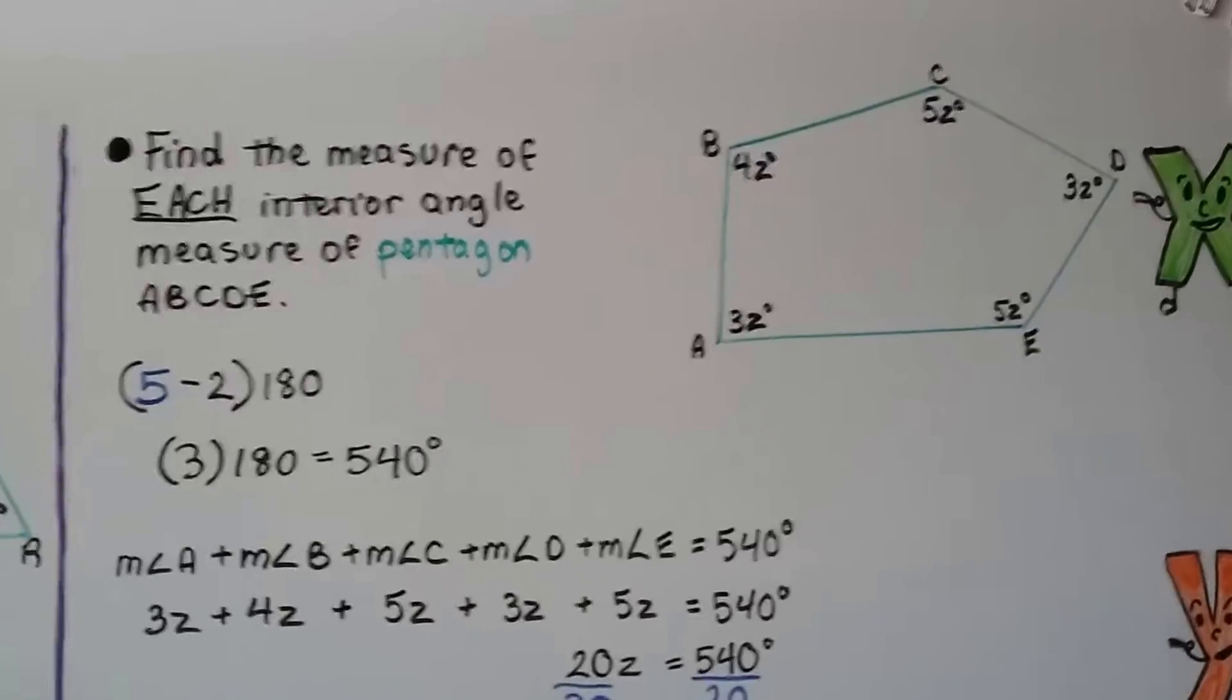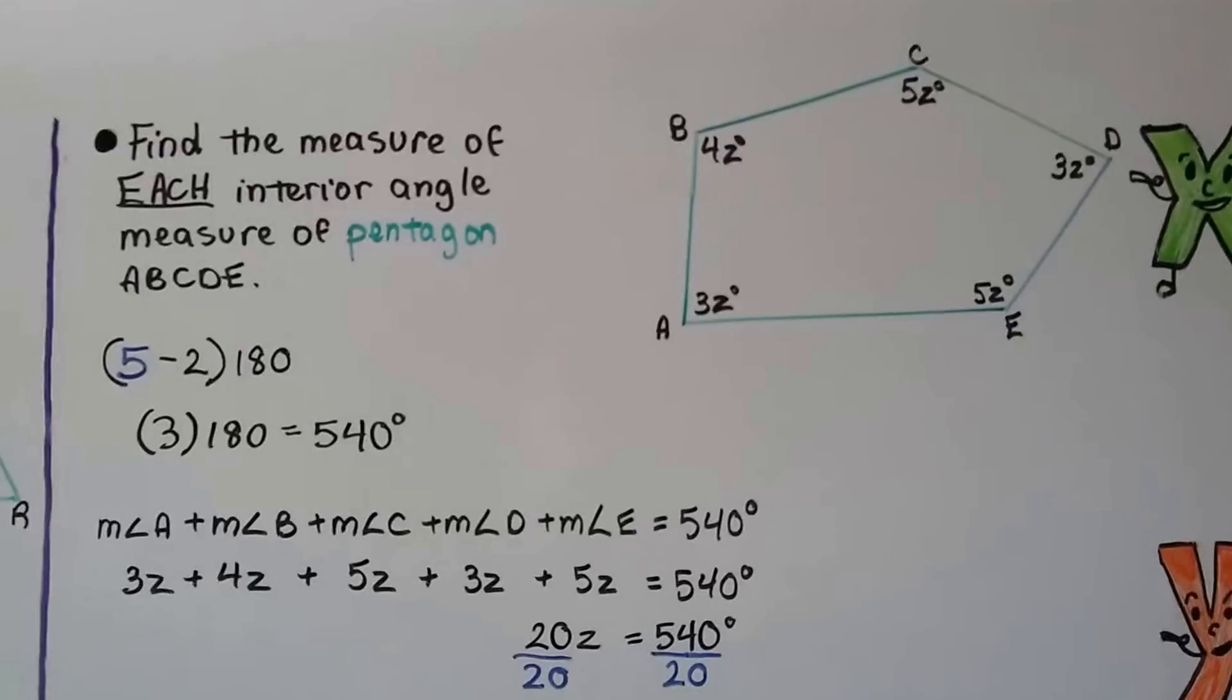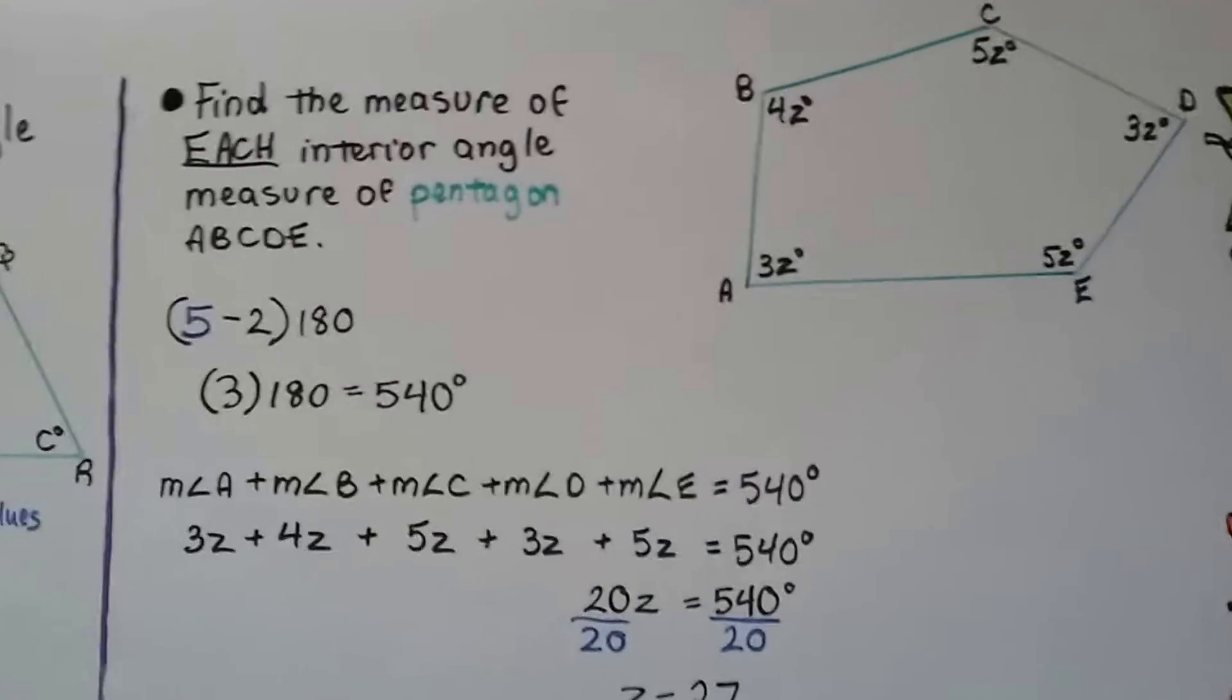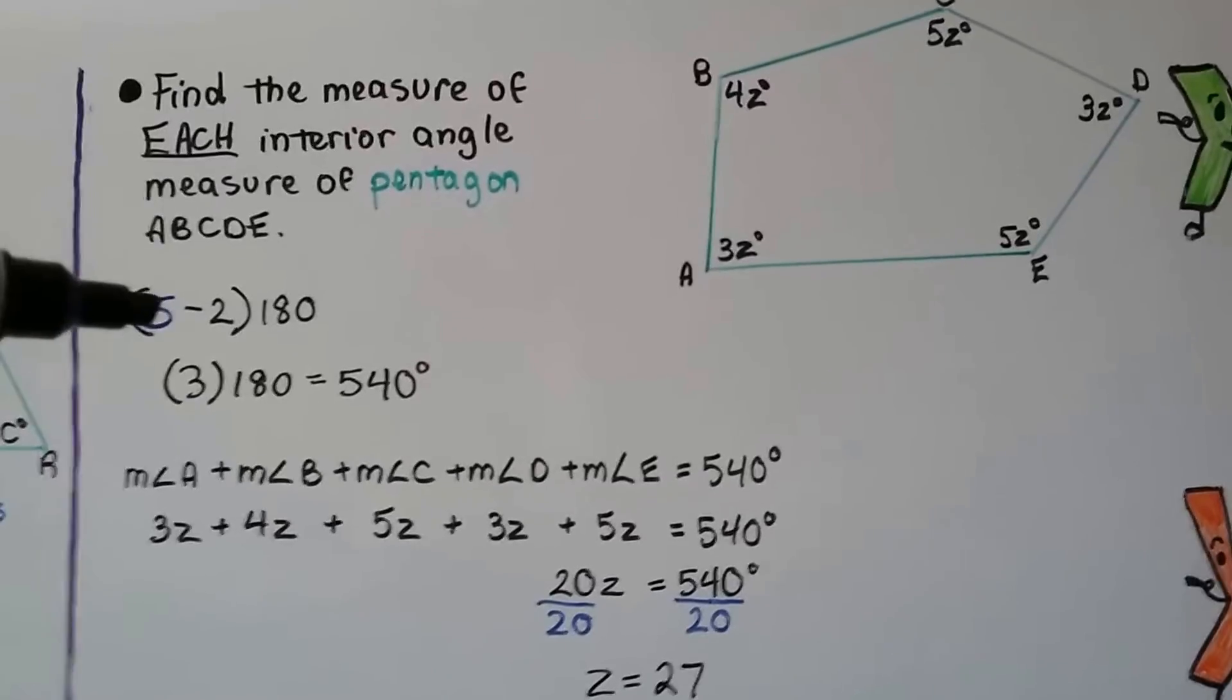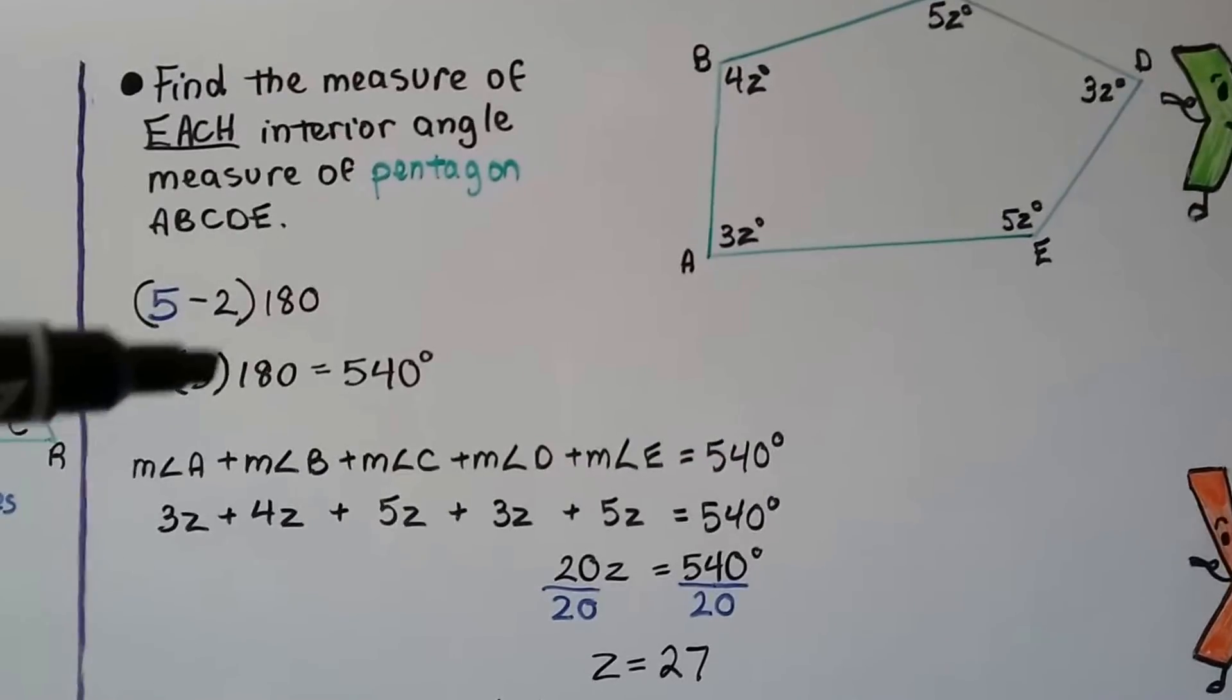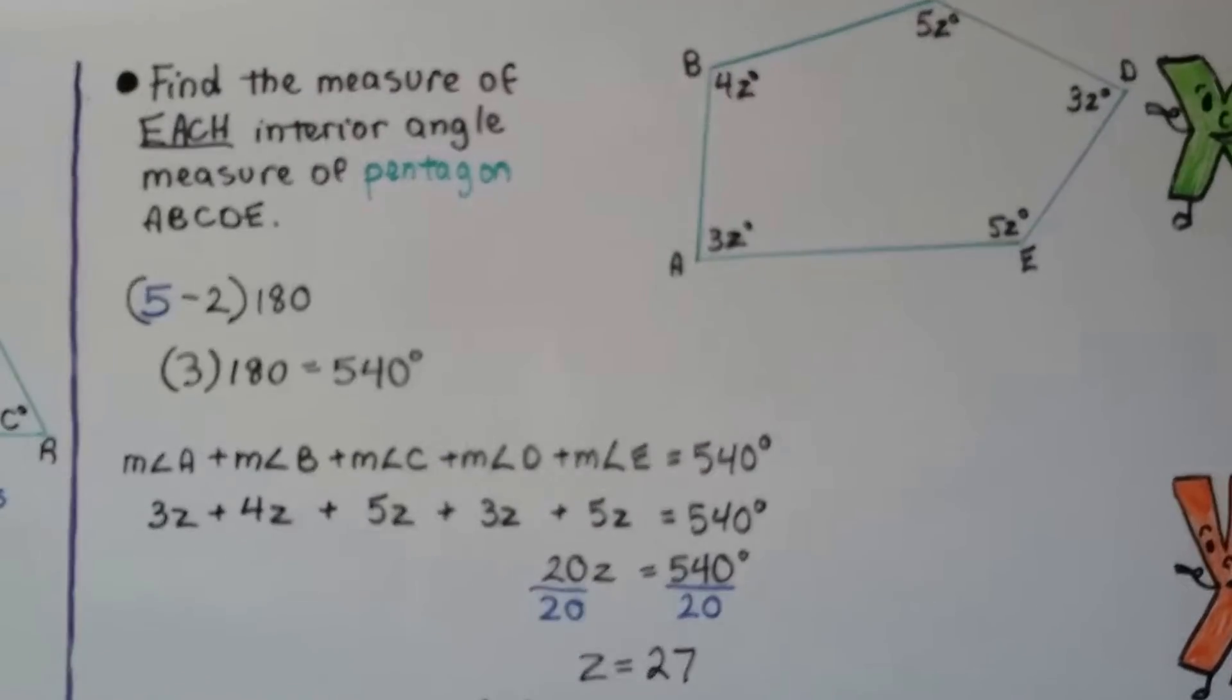We've got one last one, this video isn't that long. We find the measure of each interior angle measure of pentagon ABCDE. We're going to do the same thing. A pentagon has five sides, 5 minus 2 gives us 3. Three times 180 is 540 degrees, so we know the whole thing is 540 degrees.